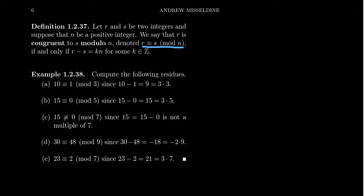We'll denote this as R is congruent to S mod N, if and only if the difference of the two numbers, R minus S, is equal to a multiple of N, where K is any integer. So if N divides R minus S, we say R is congruent to S mod N. That's what it means for integers to be congruent modulo N.